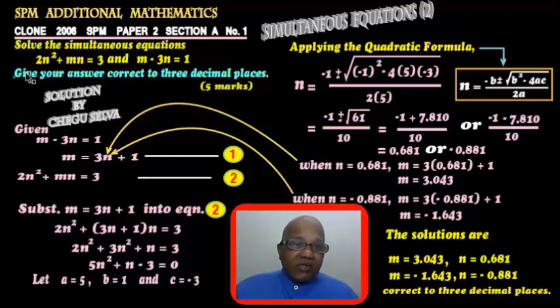Now, if you are asked to give your answer correct to 3 decimal places, it means that the resulting quadratic equation cannot be factorized. So you have to use the quadratic formula, this one, the quadratic formula.